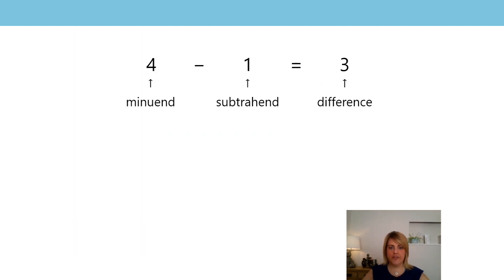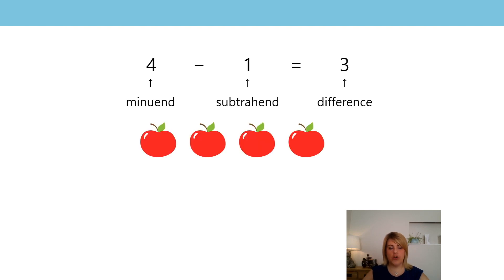In this lesson we are going to use some of the vocabulary of subtraction which you have used before. We are going to use minuend, subtrahend, and difference. There are four apples and one orange. What is the difference between the number of apples and the number of oranges? Four subtract one is three, so the difference between the number of apples and the number of oranges is three. The minuend is the four apples, the subtrahend is the one orange, and the difference is three.